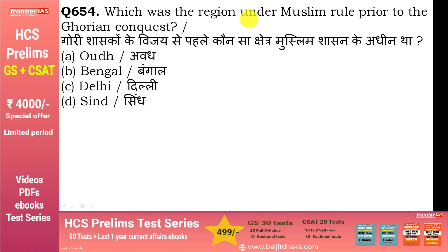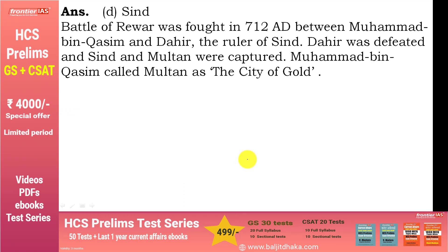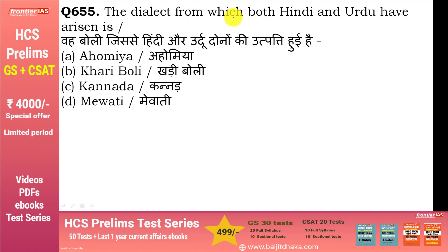Which was the region under Muslim rule prior to the Ghaurian conquest? वो था सिंध, क्योंकि यहाँ मुहम्मद बिन क़ासिम ने दाहिर को हराया था 712 AD में. यह सबसे पहला region था जो Muslim control में आया. और मुहम्मद बिन क़ासिम ने मुल्तान को क्या बोला था — City of Gold.